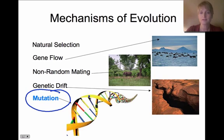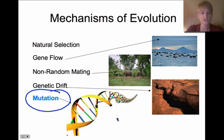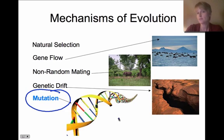The last mechanism is mutation, which is the most common form of evolution. Mutation in the genetic code causes variation in the population, and that change in variation causes changes over time — which is our definition of evolution.